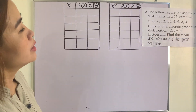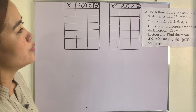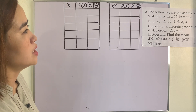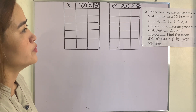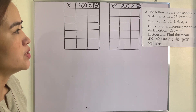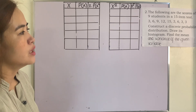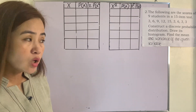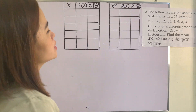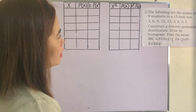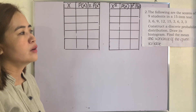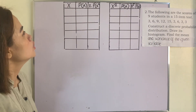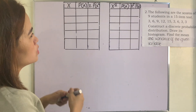Example number 2: The following are the scores of 9 students in a 15-item test: 3, 6, 9, 12, 15, 3, 6, 3, 3. Construct a discrete probability distribution, draw its histogram, and find the mean and variance of the given random variable.